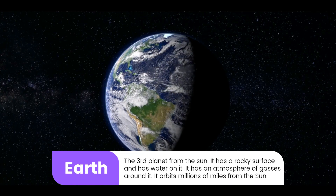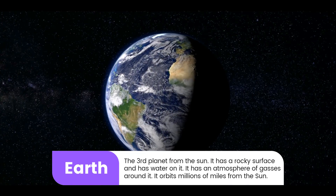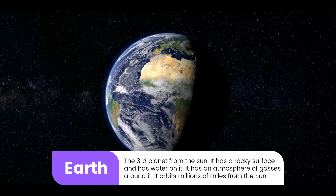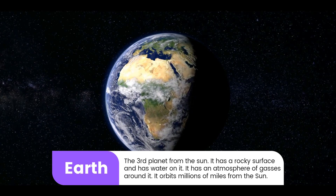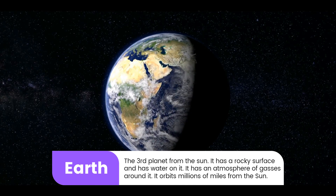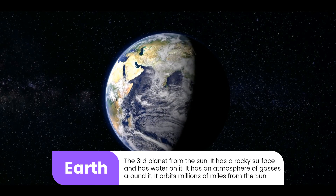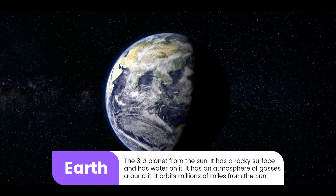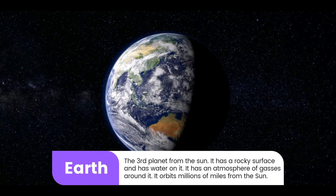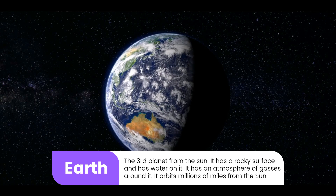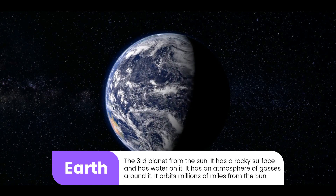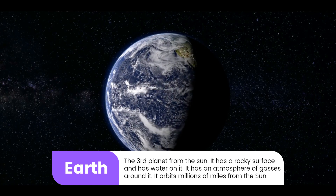2. Earth: The third planet from the Sun. It has a rocky surface and has water on it. It has an atmosphere of gases around it. It orbits millions of miles from the Sun.